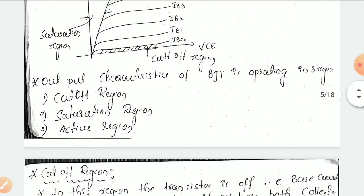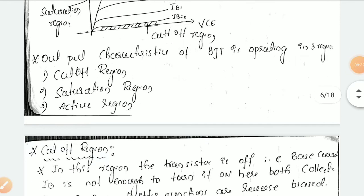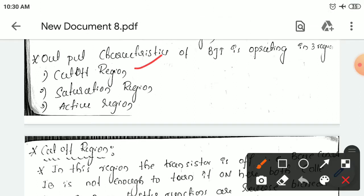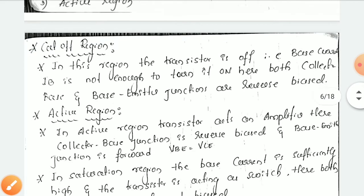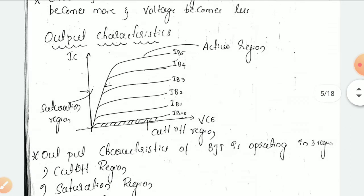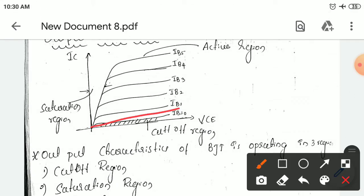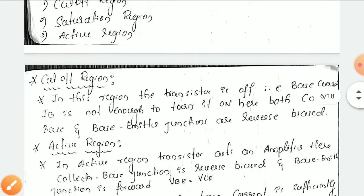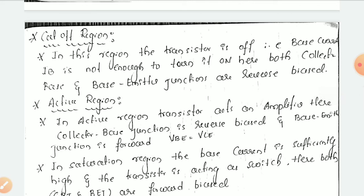The operating regions are similar to that of your MOSFET. It also operates in three regions. The output characteristics of BJT operates in three regions: cutoff region, saturation region, and active region. In the cutoff region, the transistor is off — the transistor is at the off state — because the current IB is not sufficient to turn it on. That is why in the cutoff region the transistor is at the off state.